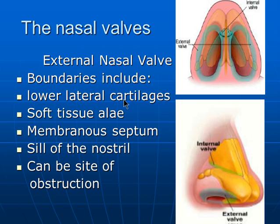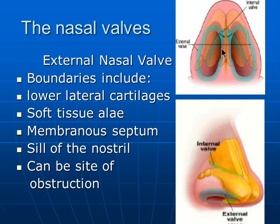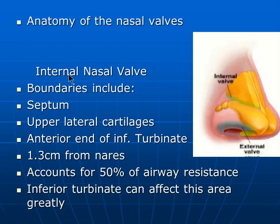The external nasal valve boundaries are formed by the lower lateral cartilage and the soft tissue of the ala. There is also some elevation before you get to the floor of the nasal cavity. The external nasal valve can be a site of obstruction, but the most important one is the internal nasal valve.